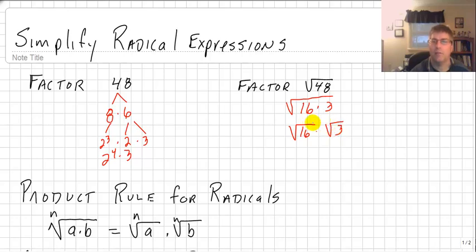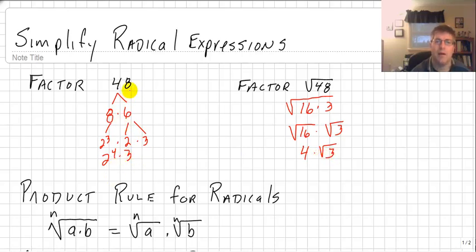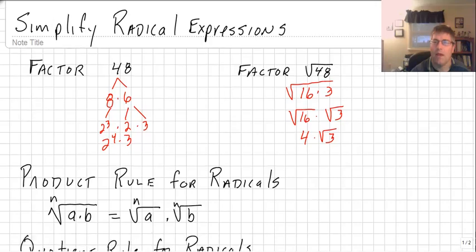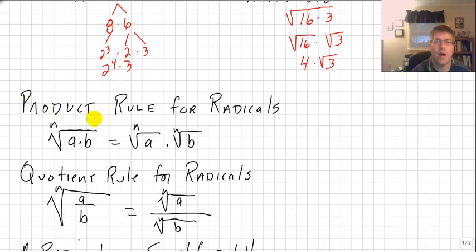The square root of 16 times the square root of 3: the square root of 16 is 4, and the square root of 3 is just the square root of 3. So factoring the square root of 48 we get 4 times the square root of 3. Note that 48 and radical 48 are different numbers — different locations on the number line. What I've applied here is the product rule for radicals, which lets us take a square root and split it into a product of two different square roots, just like factoring a composite number.